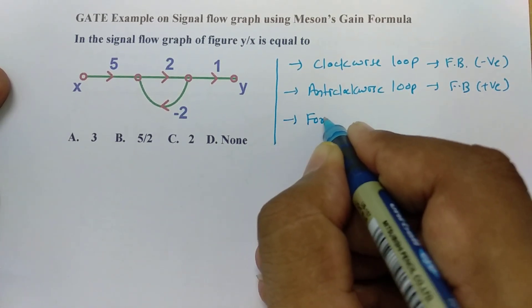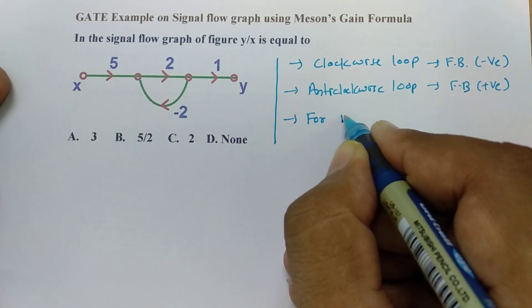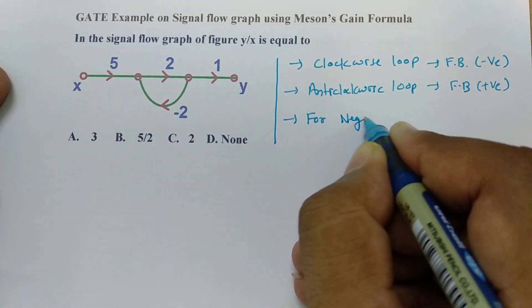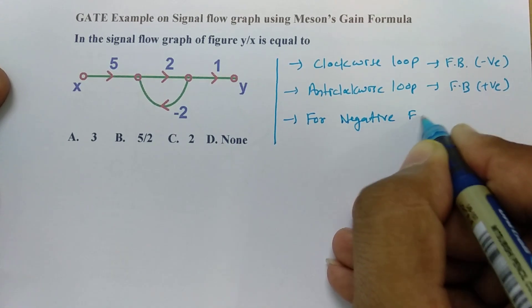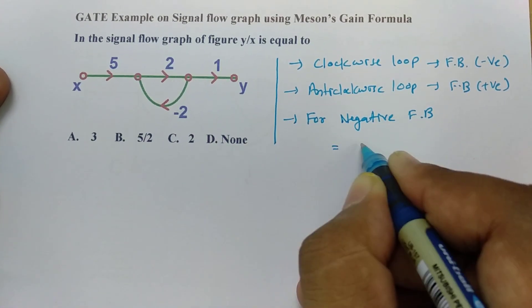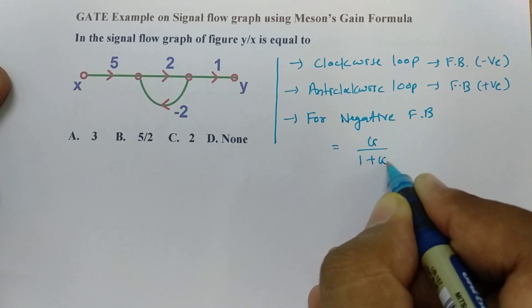So for negative feedback, transfer function will be g divided by 1 plus gh.